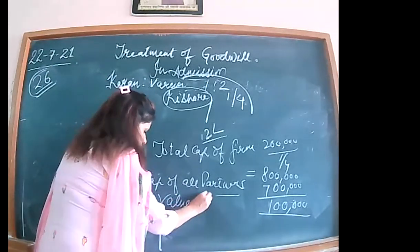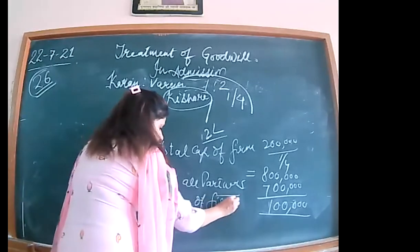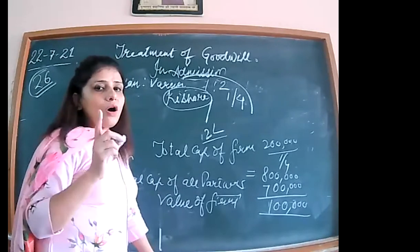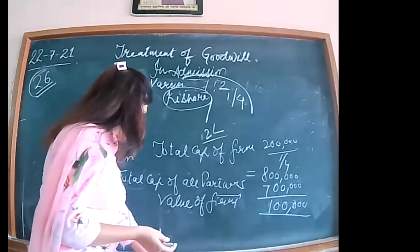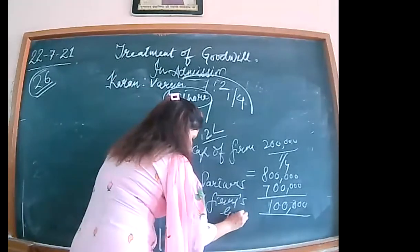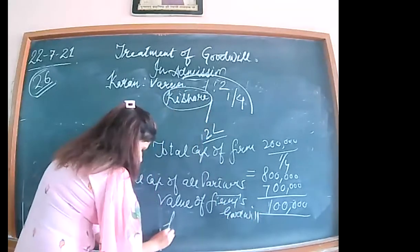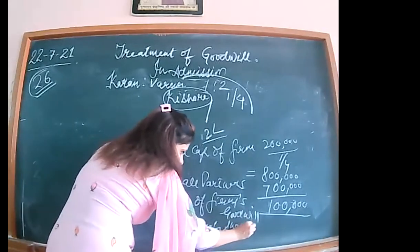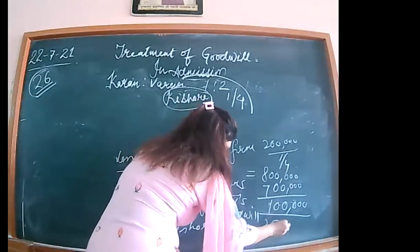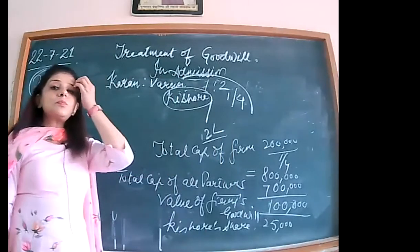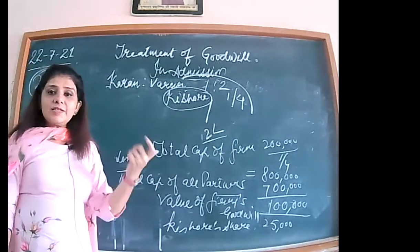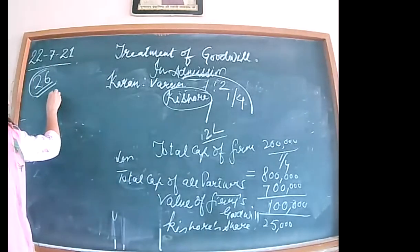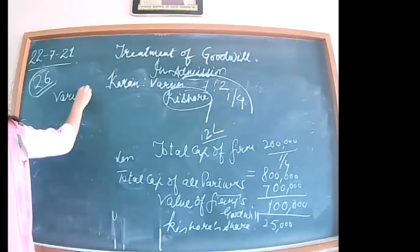The value of the firm's goodwill is 1 lakh — worth 4 marks (valuation of goodwill, new profit sharing ratio, and two journal entries). Kishore's share of goodwill = 1 lakh × 1/4 = 25,000, which he is not bringing in cash. So his current account is to be debited. Before passing the entry, calculate the new ratio.